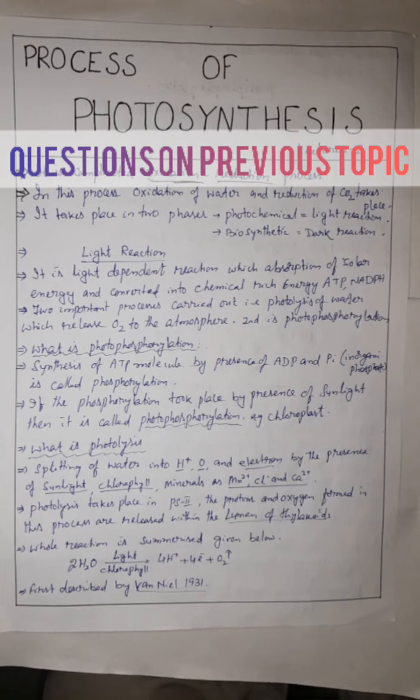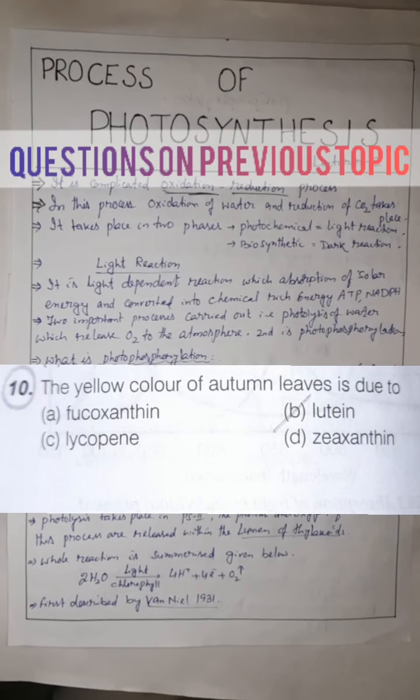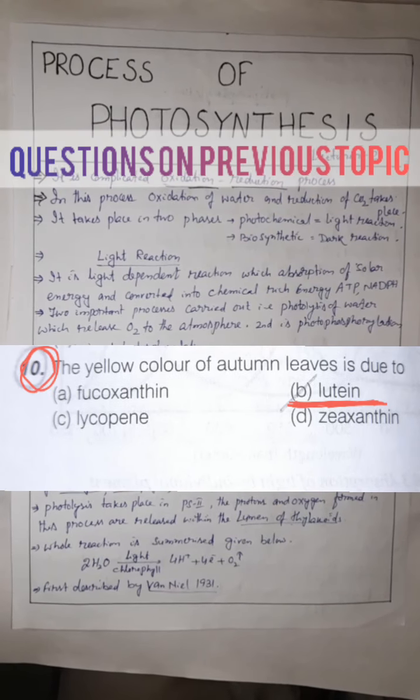Last question: The yellow color of autumn leaves is due to — Option A: fucoxanthin. Option B: lutein. Option C: lycopene. Option D: xanthine. Answer is lutein.